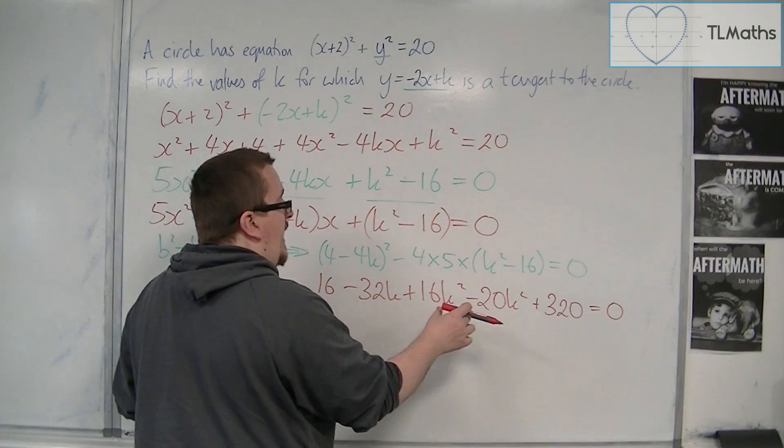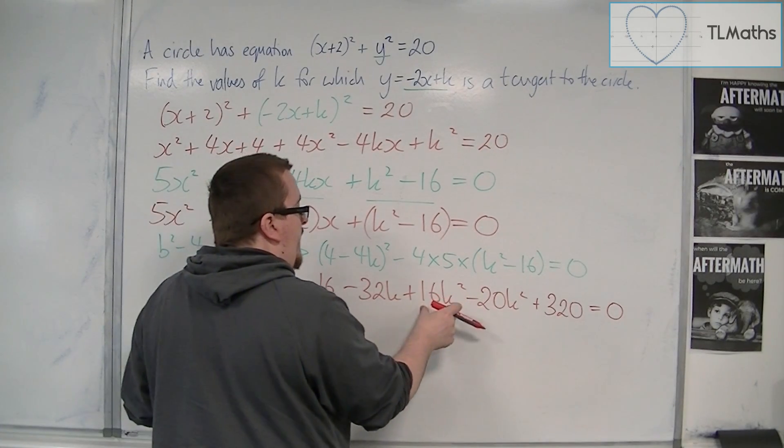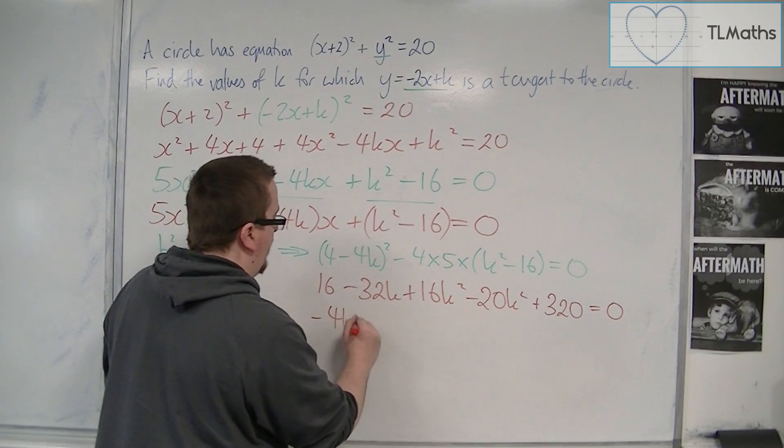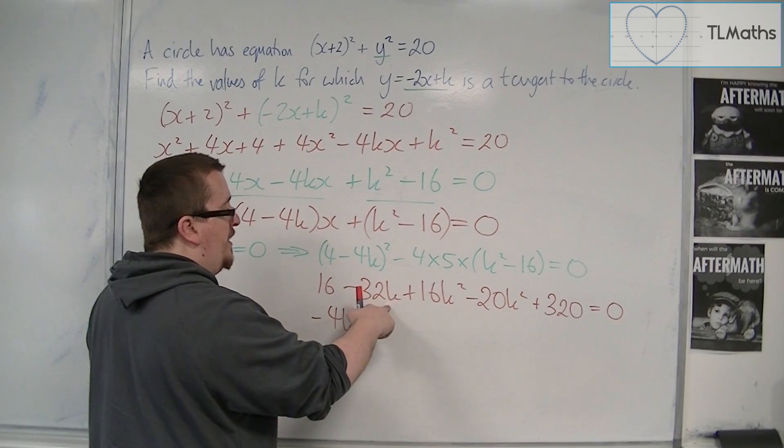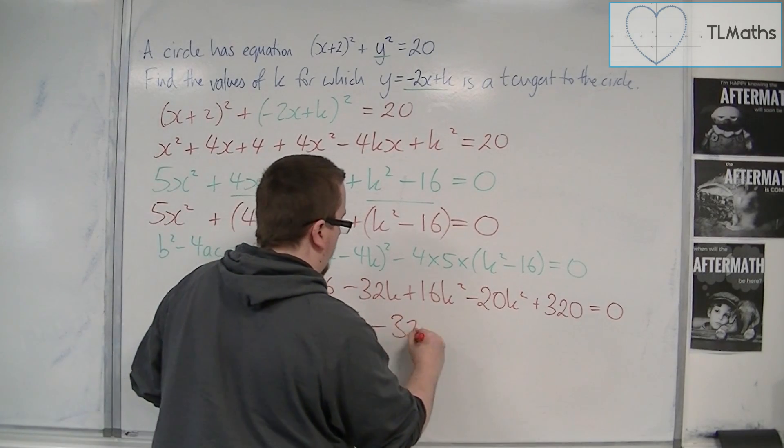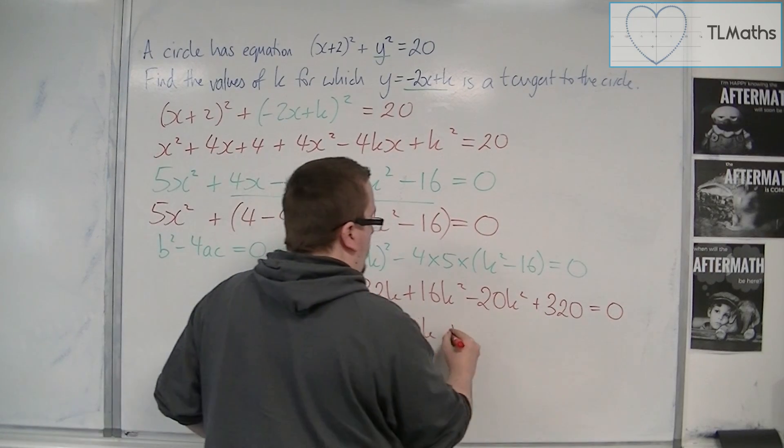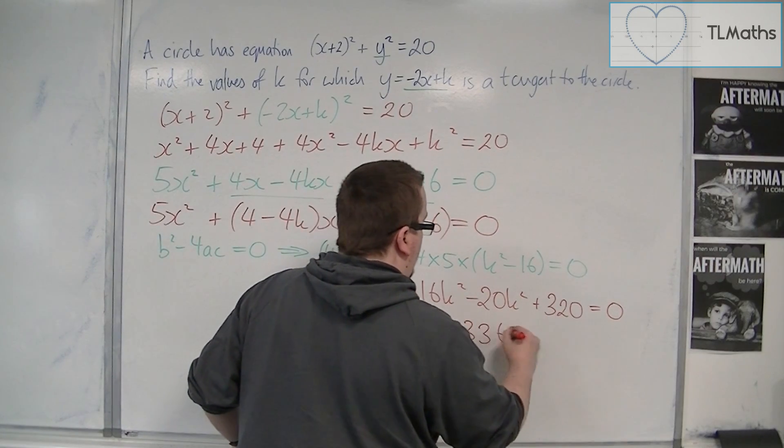So let's get the k² together. 16k² take away 20k² is -4k². We've got -32k, and then we've got 16 + 320, so 336.